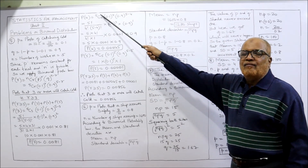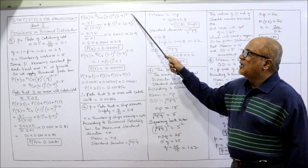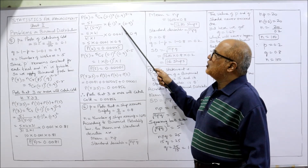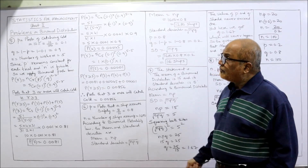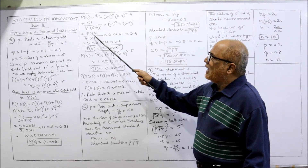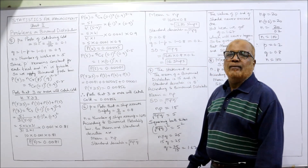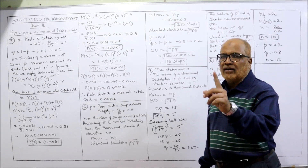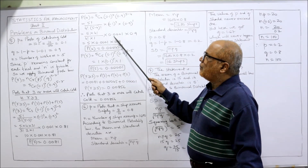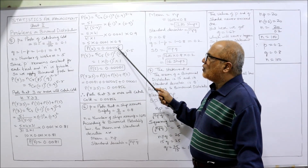P(4) = 5C4 × (0.1)^4 × (0.9)^(5−4). 5C4 = 5!/（4! × 1!） = 5. Note: 1 factorial always equals 1. So we get 5 × (0.1)^4 × (0.9)^1. (0.1)^4 = 0.0001 and (0.9)^1 = 0.9. Multiplying: 5 × 0.0001 × 0.9 = 0.00045. So P(4) = 0.00045.